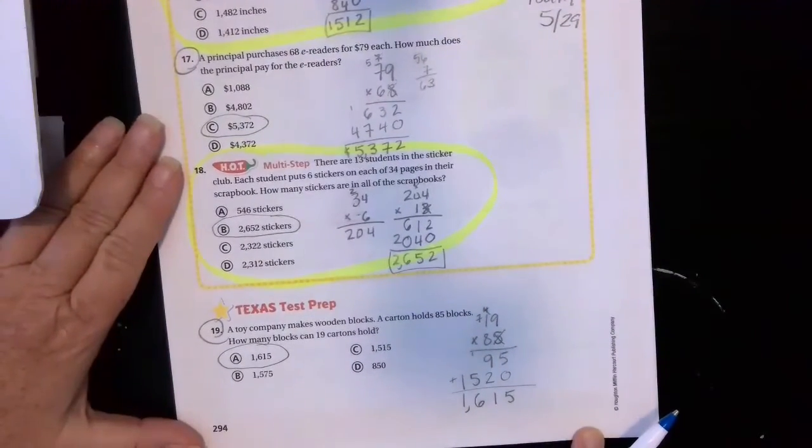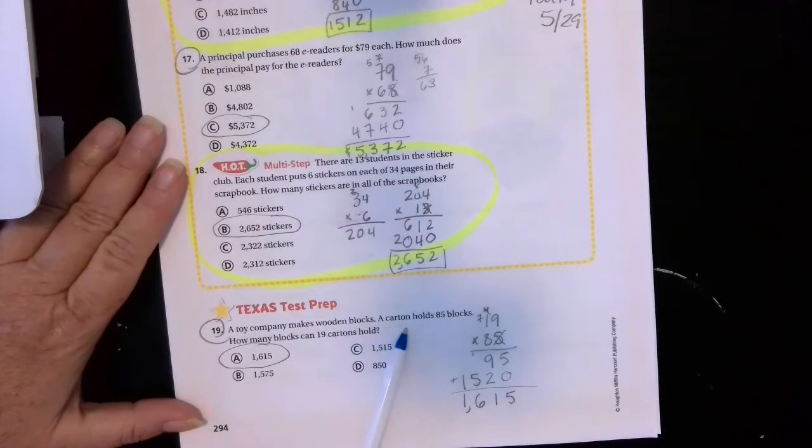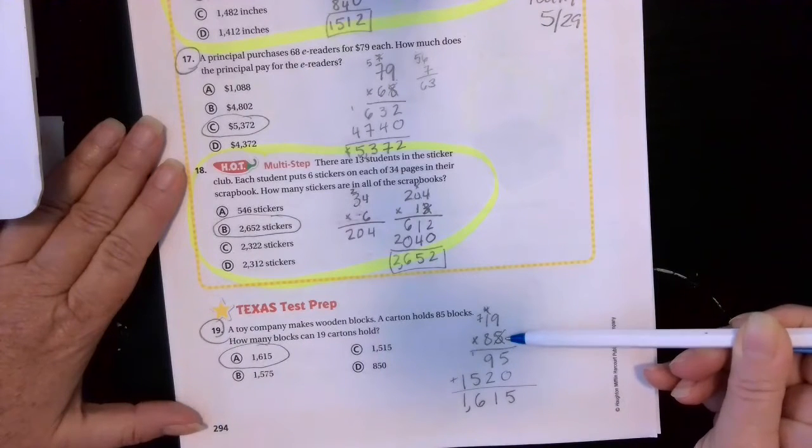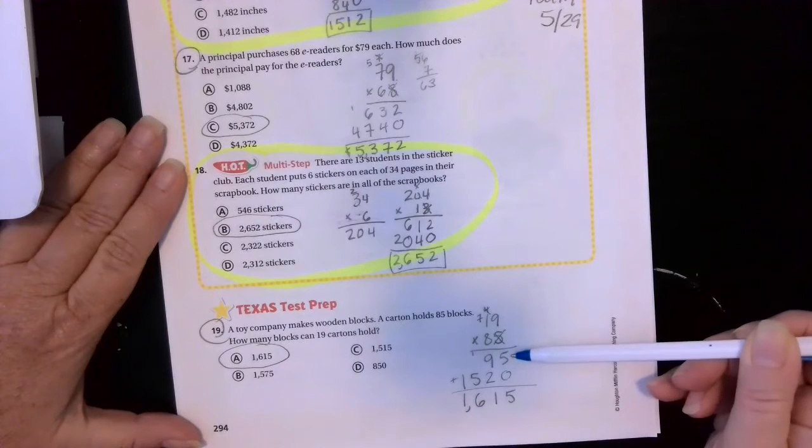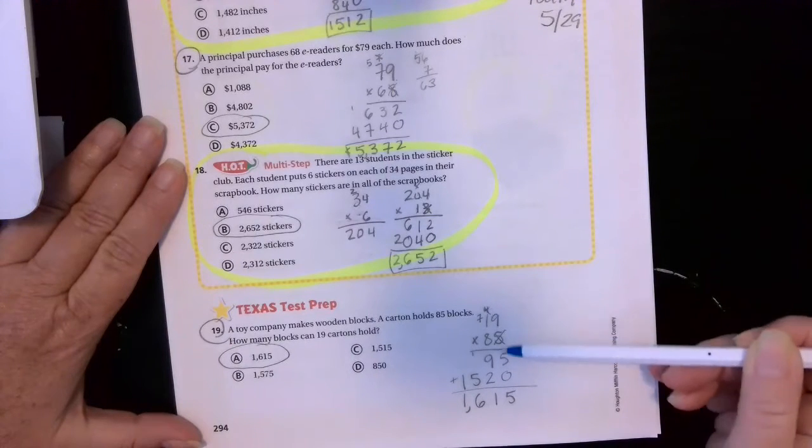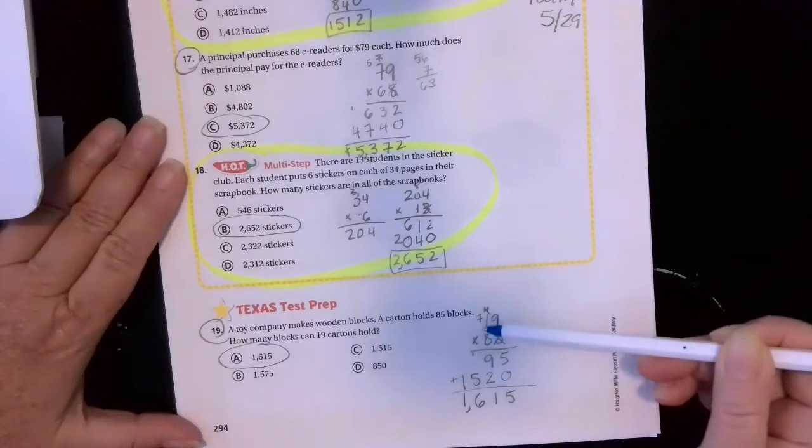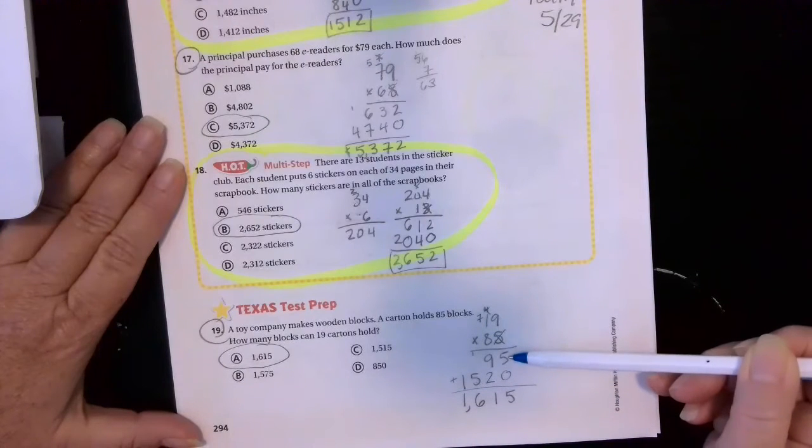So number 9, a toy company makes wooden blocks. A carton holds 85 blocks. And how many blocks can 19 cartons hold? So 19 cartons with 85 in each carton. We just multiplied them. 5 times 9 was 45. Put down my 5, and carry my 4. Then I'm multiplying by 10. So I put down my 0, and crossed out everything to do with the ones place.